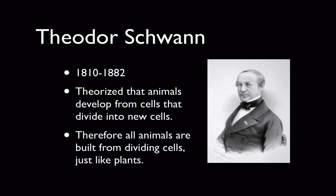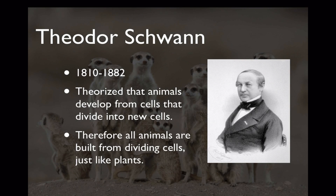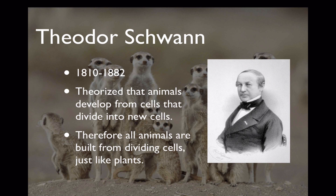The next scientist is Theodore Schwann. He lived from 1810 to 1882 — again a 19th century scientist. He theorized that animals develop from cells that divide into new cells. So he kind of did what Schleiden had done with plants, but he studied animals. He theorized that all animals are built from dividing cells, just like plants. So he's the animal side of the multicellular life situation.